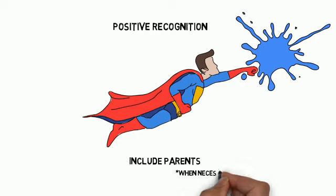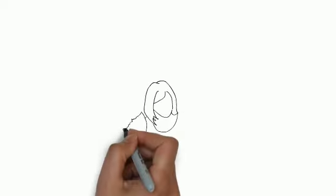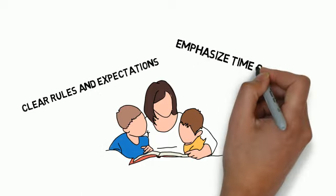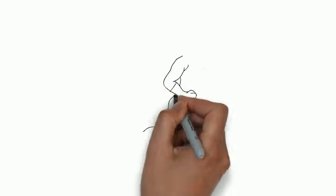Millennials are also sheltered. As children, they were sheltered from harm's way. Millennials expect clear rules that are enforced with due process and structured lives. How to deal with this trait? Clear rules and expectations and emphasize time on task.